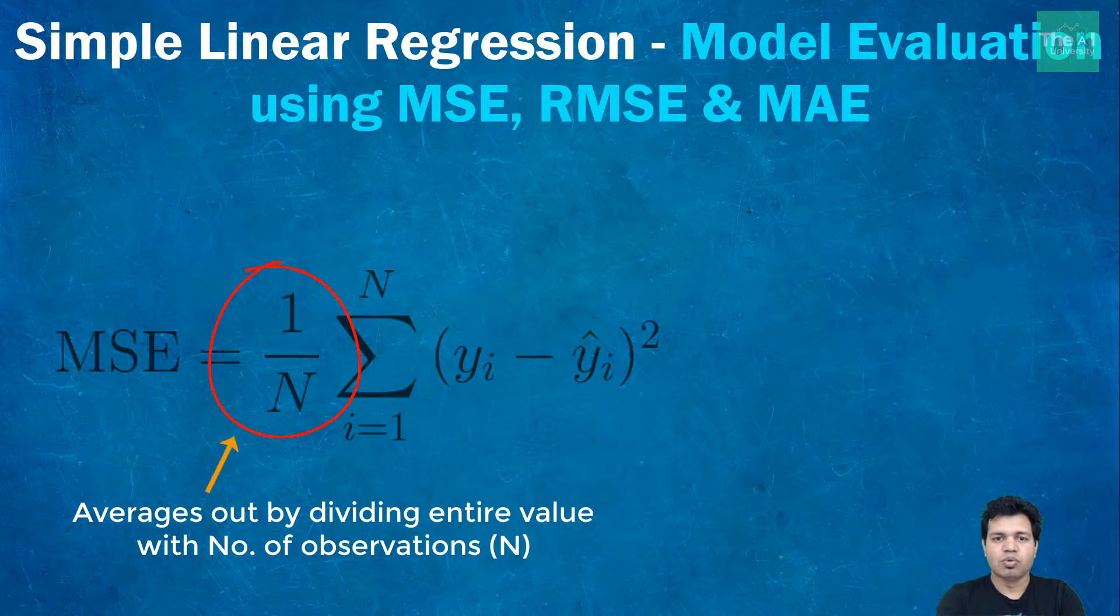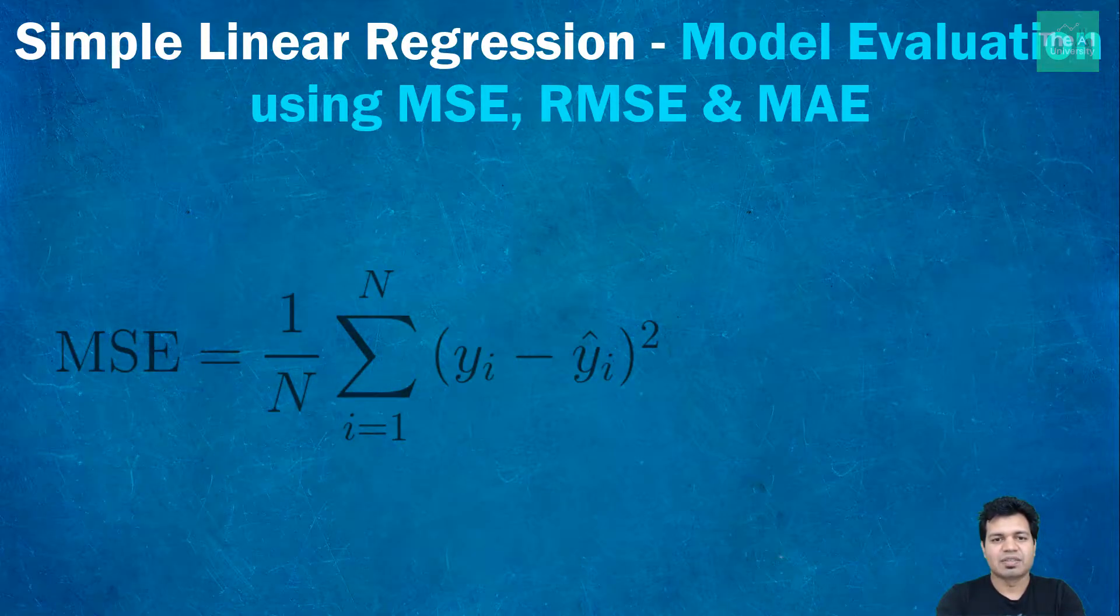It also gives more weight to larger differences. So it's called the mean square error because you find the average of set of errors. Mean square error is probably the most simple and common metric for evaluating regression family of algorithms.